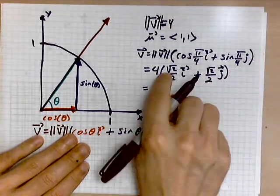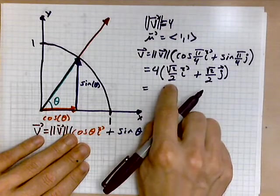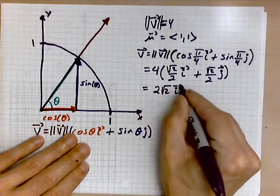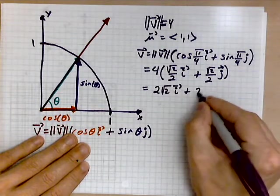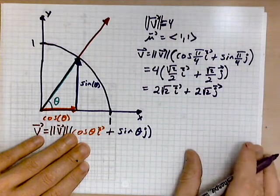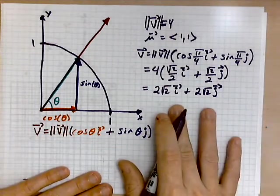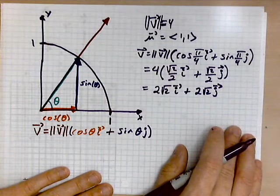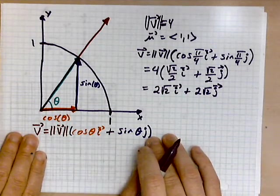Now we simplify. This gives simply 4 divided by 2, which is 2. So this is now 2 times the root of 2, i, plus 2 times the root of 2, j. So what we've expressed is a vector v as a scalar multiple of this vector here.